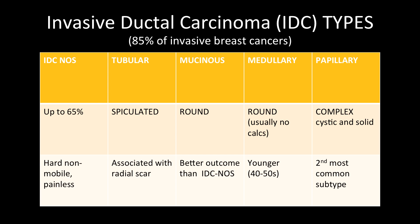Leaving DCIS behind and talking about invasive ductal carcinoma: IDC is already a mass or invasive breast cancer, and it composes about 85% of invasive breast cancers. The other 15% is likely going to be ILC, invasive lobular carcinoma. From the subtypes of IDC, the most common is IDC NOS — NOS stands for not otherwise specified — and it is the main component of IDC types, composing about 65% of this group.